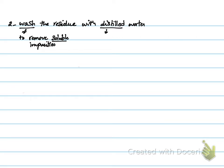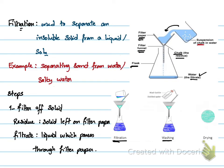We use distilled water and not tap water because distilled water does not contain any dissolved salts. If we used tap water on the residue, we would introduce salt. So step number two is washing, and step number one was filtration. Then we do drying the residue.